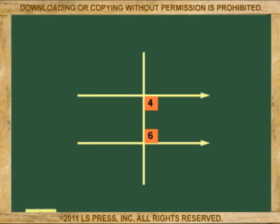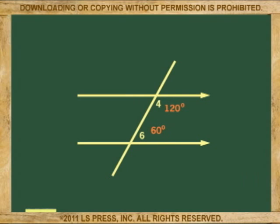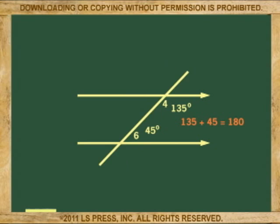For example, if a transversal line is perpendicular to both parallel lines, angle 4 and angle 6 would be 90 degrees each because that is the definition of perpendicularity. Now as the transversal moves in a slant and loses its perpendicularity, one angle becomes smaller and the other larger by the same amount, but they still add up to 180 degrees. In other words, they are still supplementary.